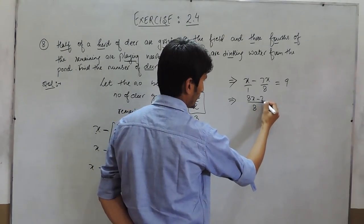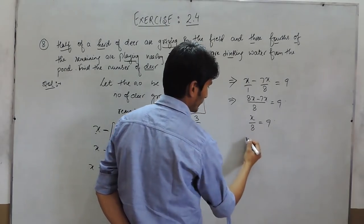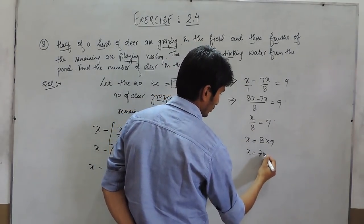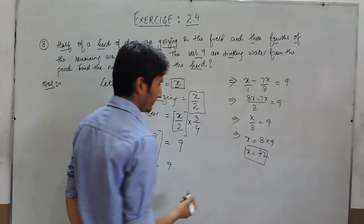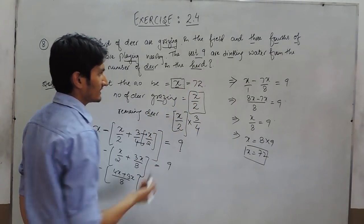So x/8 would be equal to 9. So x would be equal to 8 times 9. So x should be equal to 72. This means the total number of deer must be equal to 72. Thank you.